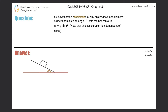Number eight: show that the acceleration of any object down a frictionless incline that makes an angle theta with the horizontal is a = g·sine(theta). Note that this acceleration is independent of mass. Here's the incline — we have a certain object with a certain mass on that incline. The surface is frictionless, so it's free to slide down, and the incline makes an angle theta with the horizontal.